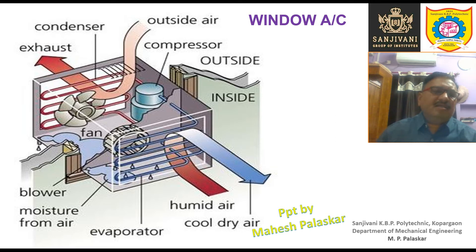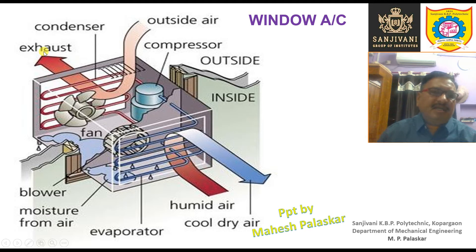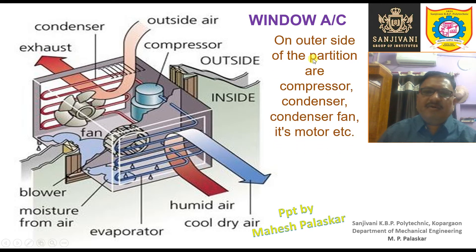The air from the room enters inside the Window Air Conditioner, comes in contact with the evaporator coil, gets cooled, and then goes back to the room. Similarly, outside air comes in contact with the condenser coil, gets heated, and leaves the air conditioner. On the outer side of the partition we have the compressor, condenser, condenser fan, and its motor.